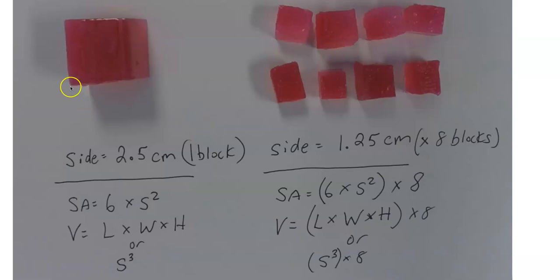So instead of 2.5 centimeters per side, each small cube will be 1.25 centimeters long, 1.25 centimeters high, and 1.25 centimeters wide, for a total of eight blocks. But if you add up the volume for both of these, it's actually going to be the same.